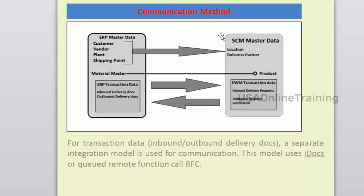EWM is the system for managing how you keep your products: how much inventory, what are fast-moving products, slow-moving products, and dead stock — all that happens in the SCM/EWM box. ECC is the financial box. EWM works only with deliveries: inbound deliveries, outbound deliveries, or posting-change deliveries.